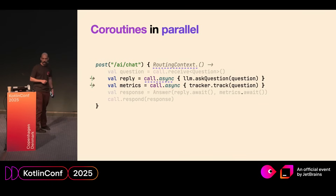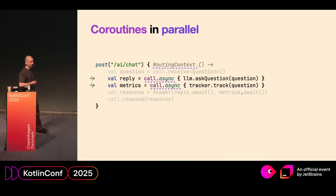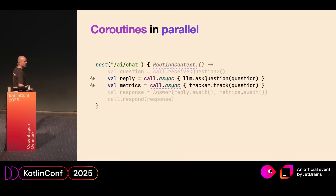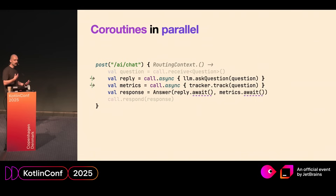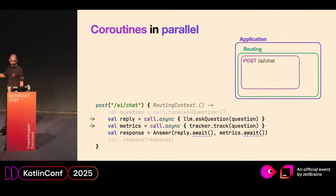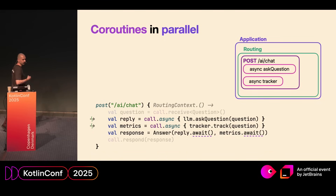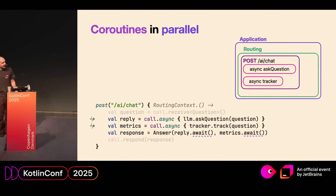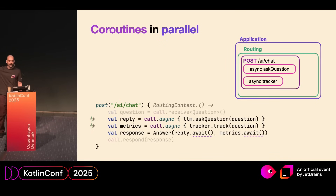Here we have an updated example of our post endpoint. We use the routing context to access the routing call, and we can create new async coroutines on that call. Here we are creating two new coroutines, one for asking the LLM a question and one for tracking some metrics. Later in our code, we need to await these deferred values to extract the calculated values inside, and we can then send a response to the user. So these coroutines are children of the coroutine scope that is running our routes.